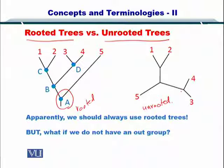So to give you a naive opinion or simplistic opinion, we should always be using the rooted trees because they help us to organize the order of evolution as compared to the unrooted trees. So apparently the unrooted trees are no good, but there are several advantages of the unrooted trees as well.